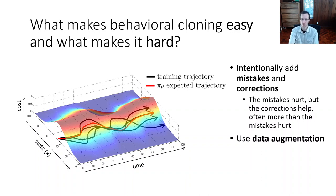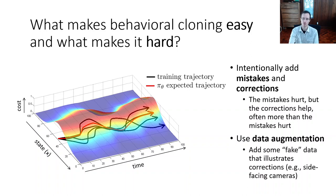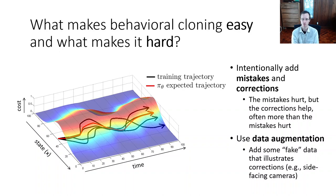Another thing we could do is use some form of data augmentation. That camera trick from before can be thought of as a kind of data augmentation — a method that adds some fake data illustrating corrections, like those side-facing cameras. That can be done by leveraging domain knowledge about the problem you're solving to create additional fake data. In both cases, the aim is to provide examples in states that the expert is unlikely to visit, but that the policy might end up landing in.